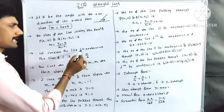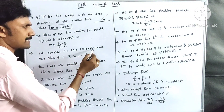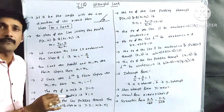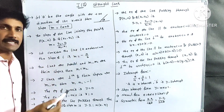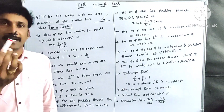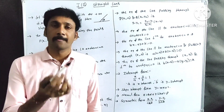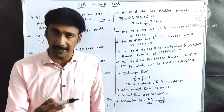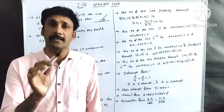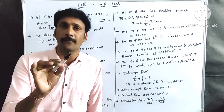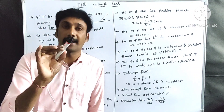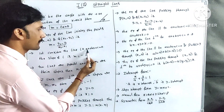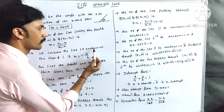For a line ax plus by plus c equal to 0, the slope is m equal to minus a by b. So the three slope formulas are: m equal to tan theta; for two points, m equal to y2 minus y1 by x2 minus x1; and for a line equation, m equal to minus a by b, which is minus x coefficient by y coefficient.